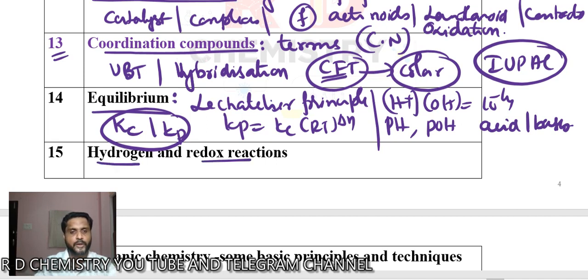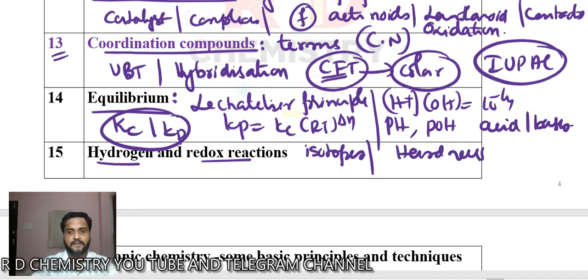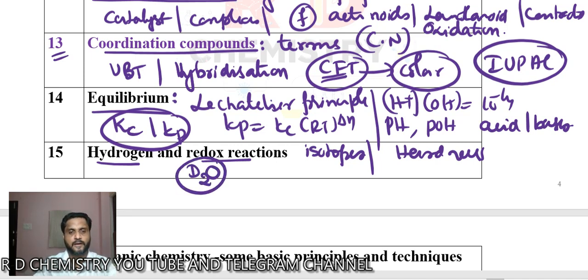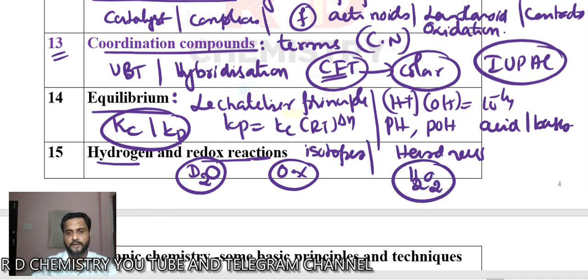Under hydrogen and redox — I put these together because the chapters are small and much content has been deleted from the syllabus. In hydrogen, study the isotopes and how to calculate the number of neutrons. Study hard water — how to remove temporary hardness and permanent hardness. Also study deuterium and D₂O. Under redox reactions, learn how to calculate oxidation number — for example, in hydrogen peroxide the oxidation number of oxygen is −1.